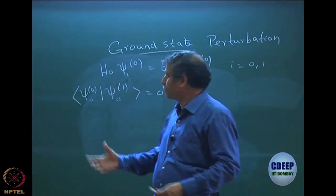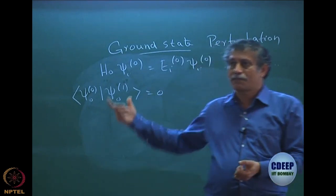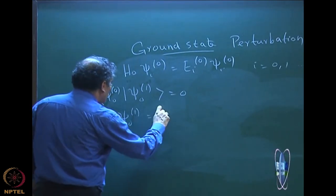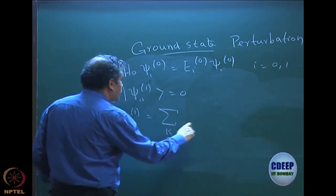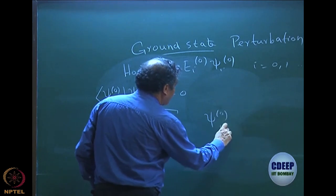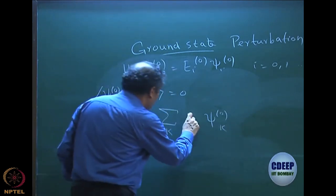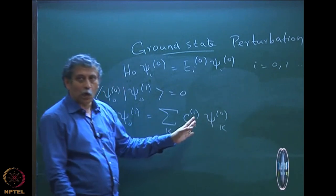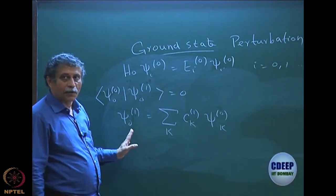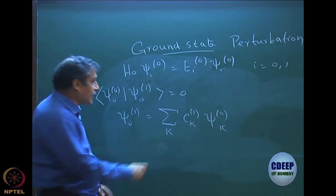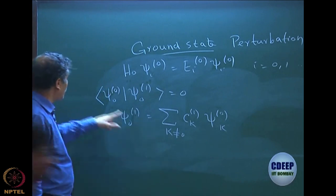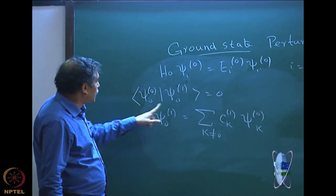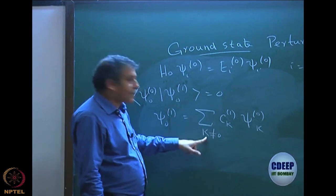The coefficient comes as an overlap. Since it is orthogonal, the coefficient must be zero. So if I expand ψ01, I will expand it as a linear combination of all ψk0 with a linear combination coefficient Ck. I will call this Ck1. Since all these ψk0s are known, I can expand ψ01 as a linear combination of all ψk0 except k not equal to zero, to enforce intermediate normalization.